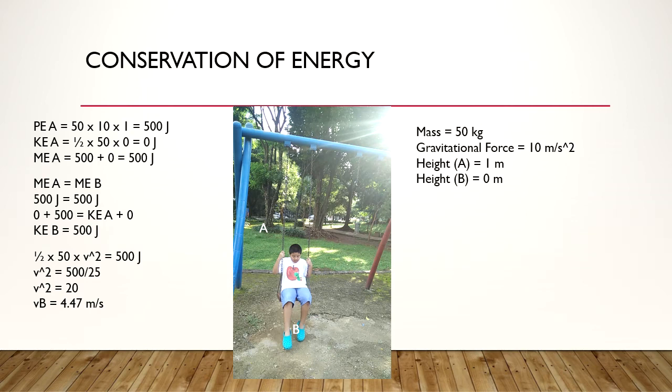Finally, we have conservation of energy. There is potential energy, which is the energy of an object that is waiting to be used and is stored. And there's also kinetic energy, which is energy an object has while in motion. The formula for potential energy is mass times gravity times height. In this case, my mass is 50 kilograms, and the force of gravity is 10 meters per second squared. At point A, the height of the swing is 1 meter above the ground. Therefore, when we multiply the mass, the gravitational force, and the height, the potential energy is 500 joules.